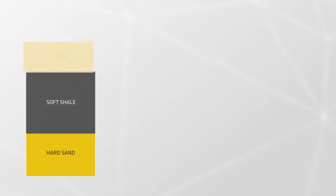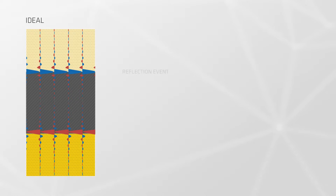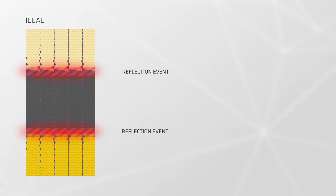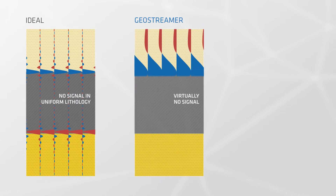In a very common geological setting, the reservoir sand is overlaid by a layer of soft shale. In this case, the seismic image should only show a single reflection event at the top and the bottom of the shale interval. No events should be visible inside the shale.